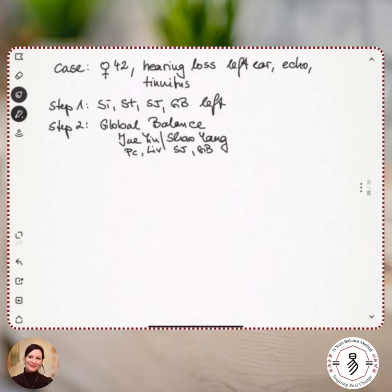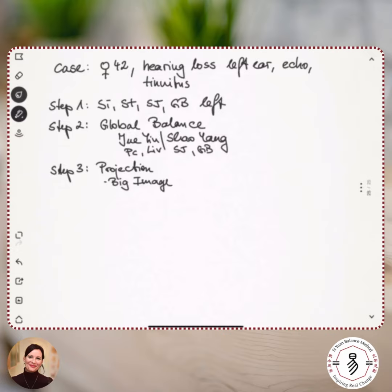For my step three, for my points, I decided to use the projection. First, I used the big image — that means I project the head right onto the arm and the leg. The big image gives me the option to be very precise, to look very precisely for Ashi points. I chose the projection because her problem was very located on one spot of the body, like the ear.